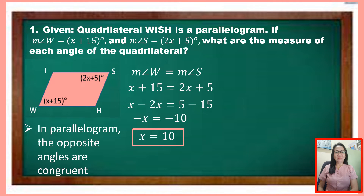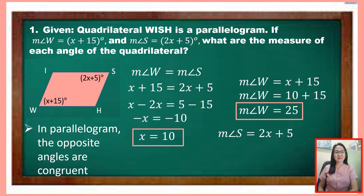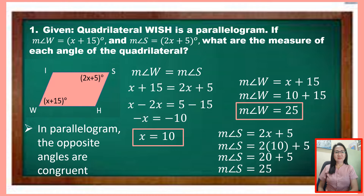We can find the measure of angle W by substituting 10 for x in x plus 15: 10 plus 15 equals 25, so the measure of angle W is 25 degrees. To verify, we substitute 10 into angle S, which is 2x plus 5: 2 times 10 is 20, plus 5 is 25. So the measure of angle S is also 25 degrees, confirming the opposite angles are congruent.